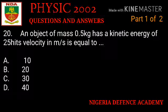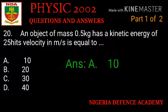Question number twenty: an object of mass 0.5 kg has a kinetic energy of 25 joules. The velocity in meters per second is equal to what? Option A: 10. Option B: 20. Option C: 30. Option D: 40. The right answer is option A — 10 meters per second.